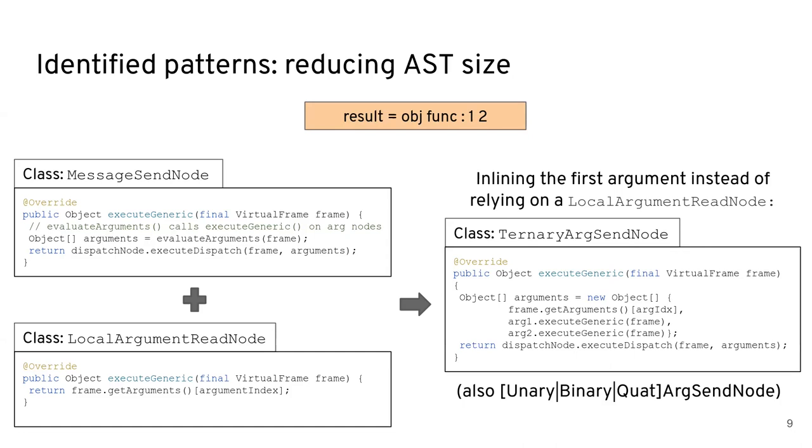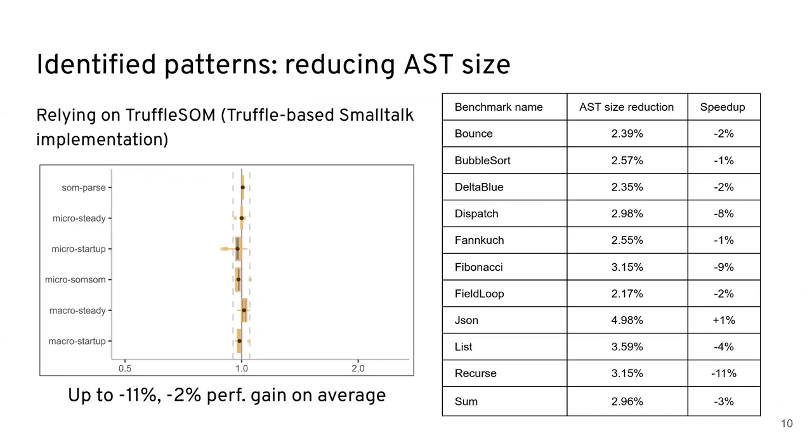So what this does is that we've generated super nodes specialized on this exact dispatch, but it has to rely on one less node than it would if we were relying on a generic message send node, because else we would need to use a local argument read node instead of inlining it into the actual more specialized message send. And as a side note, we've also generated super forms for binary and unary, so encapsulating most dispatches. So one less node for each dispatch in this manner.